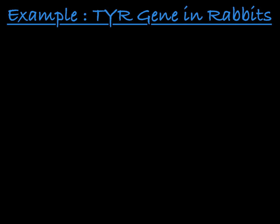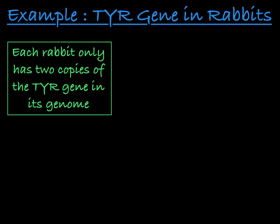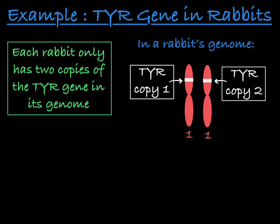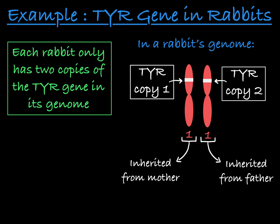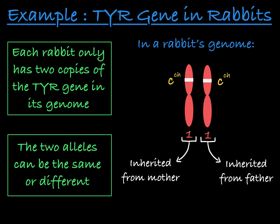It's important to remember that even though there are many alleles of the TYR gene available, each rabbit has only two copies of the TYR gene — one inherited on its chromosome 1 from its mother, and one from the chromosome 1 it got from its father. That said, a rabbit can be homozygous, containing two identical alleles of this gene, or heterozygous, containing a combination of two of these four different allele options.